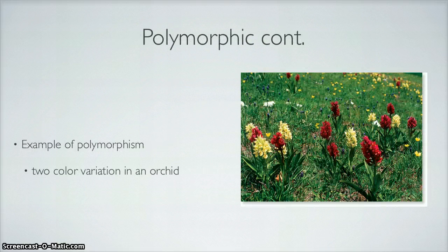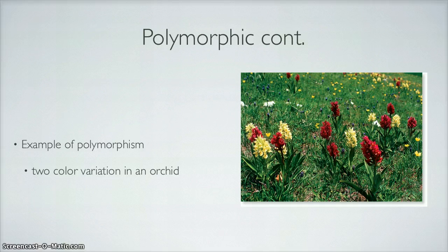An example of this would be the orchid. Look how beautiful those flowers are in that field — there are red flowers and there are yellow flowers. Why? Two different alleles, one trait, one gene.